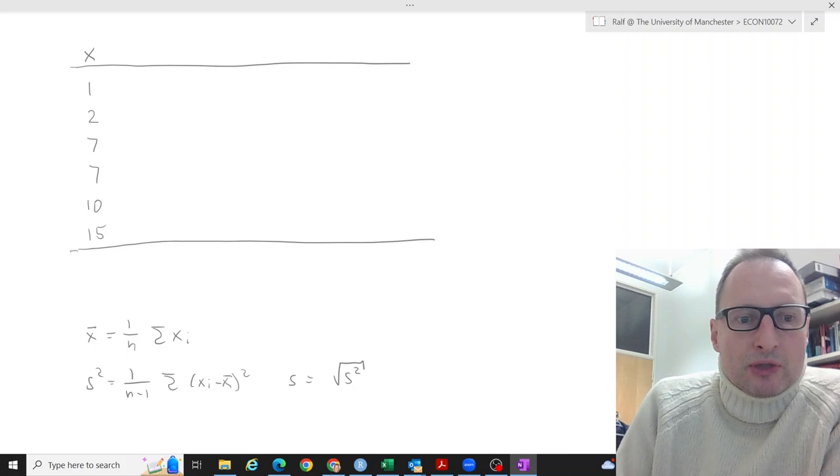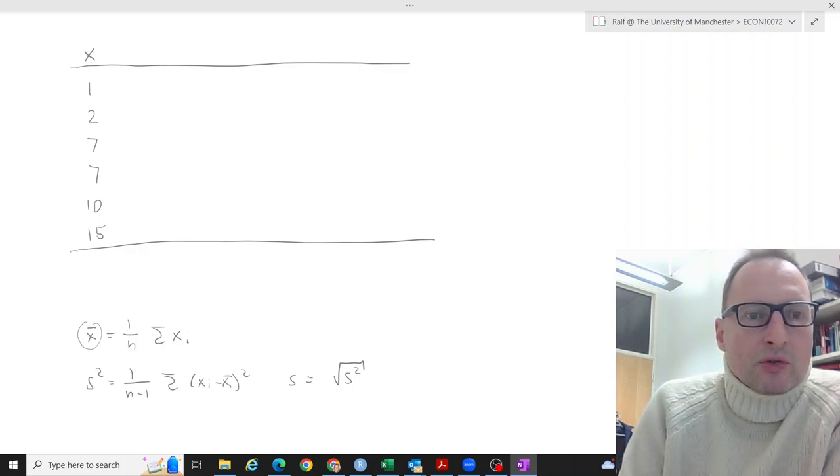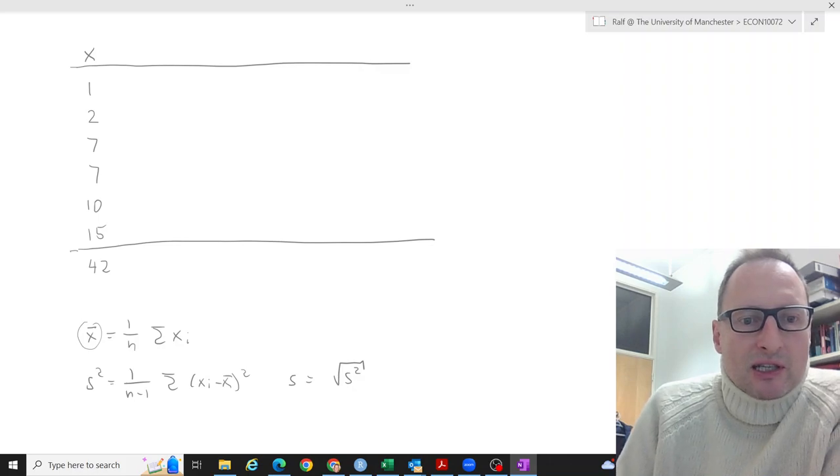So what do we need? We first need to calculate x-bar. We need the sum of all these observations. So we have 15, 25, 32, 39, 40, 42. That means that x-bar is 1 over 6 times 42 which is 7. Okay, that's the sample average.